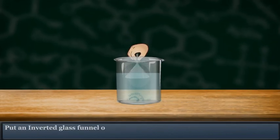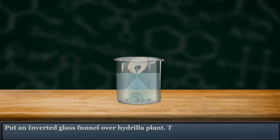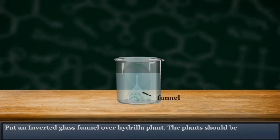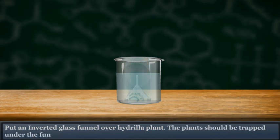Put an inverted glass funnel over the Hydrilla plant. The plants should be trapped under the funnel at the base of the beaker.